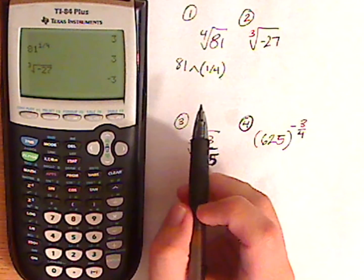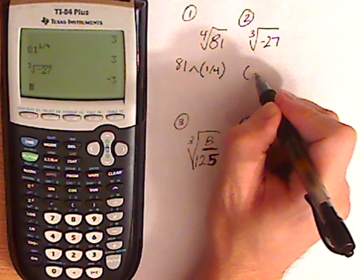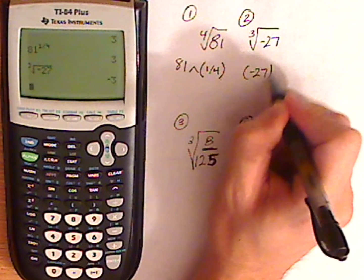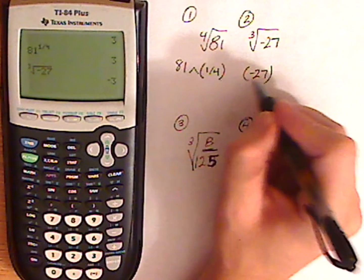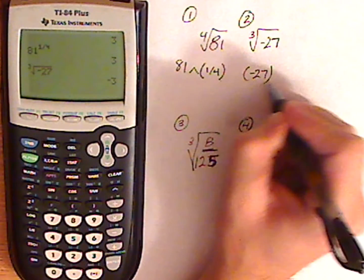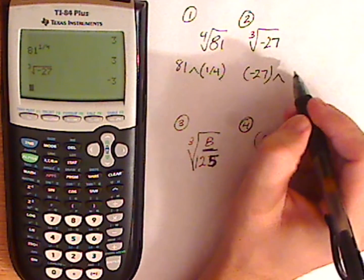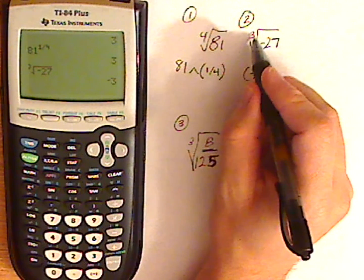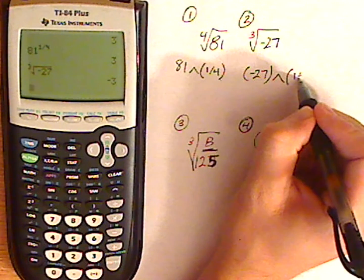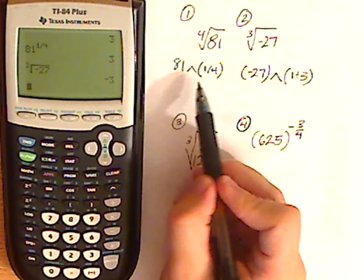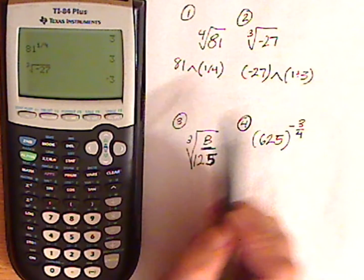There you go. Now to type it in as a rational exponent, what you want to do is you want to put the negative 27 inside the parentheses. Now here it's not going to matter, but in some cases it will matter. So just get in the habit of putting in parentheses and then use the same button again for exponents. And then whenever you have a radical like this, it's going to be one third. So 1 divided by 3. Here it was one fourth.